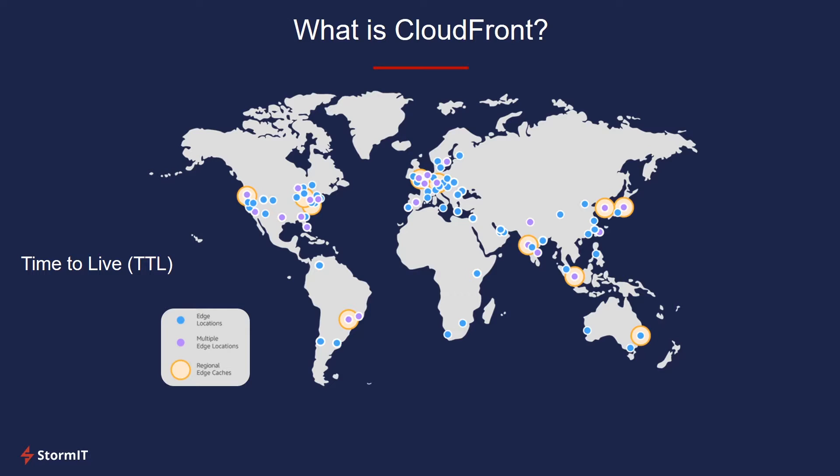For anyone wondering about regional edge caches, those are basically just larger edge locations. Think of it like this: edge locations are small and will only cache the most popular content, whereas regional caches are a bit bigger and can also store some of the less popular content for longer.